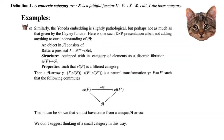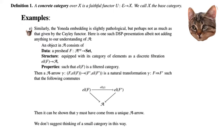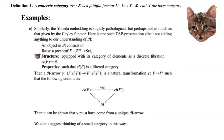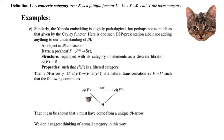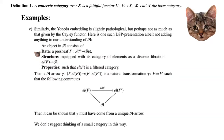Similarly, the Yoneda embedding is also pathological in this sense. However, you can give it a DSP presentation: an object in the small category A is a presheaf equipped with its category of elements such that the category of elements is filtered. An A-arrow is then a natural transformation such that the following diagram commutes, and one can show that such a natural transformation must come from a unique A-arrow. So we can regain all the information of A from this DSP description in the category of presheaves — but we don't suggest thinking of a small category this way.